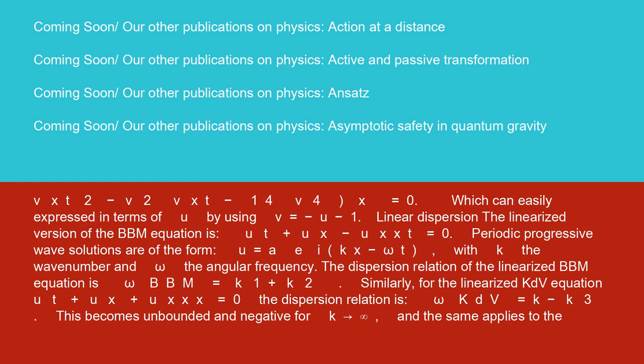Which can be easily expressed in terms of u by using v equals minus u minus 1. Linear dispersion: the linearized version of the BBM equation is ut plus ux minus uxxt equals 0. Periodic progressive wave solutions are of the form u equals a e to the i, kx minus omega t, with k the wave number and omega the angular frequency.